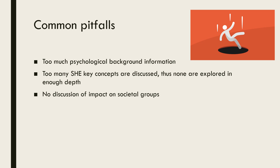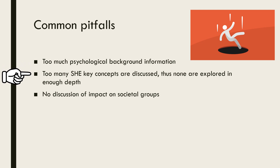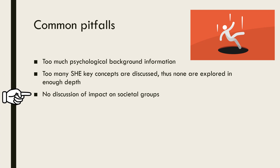Now that you have an idea of what you need to cover, let's look at some common pitfalls students make. The first is that students often provide too much background information and thus their discussion of SHE concepts is too brief and lacks depth. Another common pitfall is choosing too many SHE concepts to discuss, leading students to merely list examples rather than exploring them in depth and explaining their impact. The third pitfall is that there is often no discussion of impact at all — students conclude by merely repeating points rather than discussing impact.